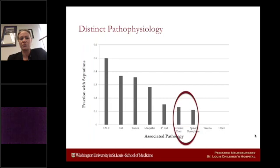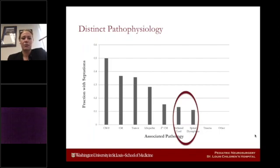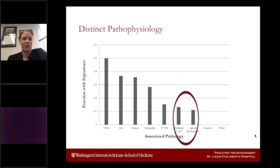We don't often talk about septations within syrinxes, but of our cohort of about 280 patients, it is interesting that those with tethered cord or spinal dysraphism-associated syrinx did not really have those septations seen in Chiari-associated syrinx. I'd like to think more with this group about what that means and why we see that difference in tethered cord patients compared to Chiari patients.